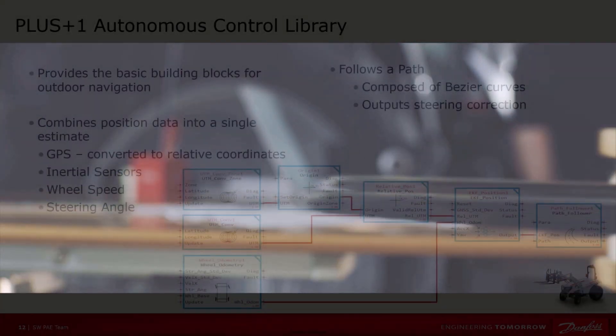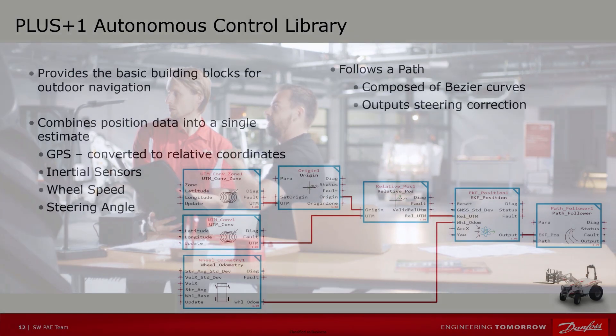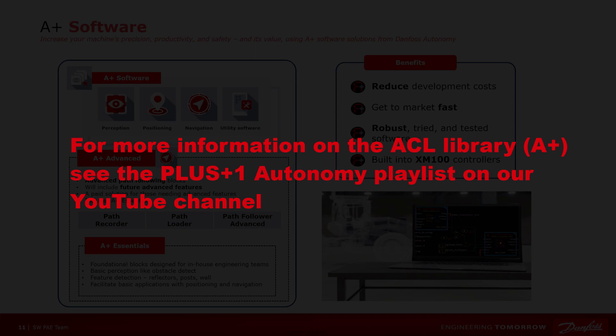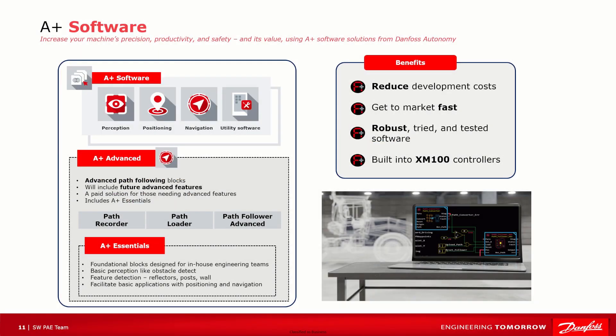The A Plus Advanced is a paid solution with advanced navigation features. It comes with path blocks like Path Recorder, Path Loader, and Path Follower Advanced. The Advanced tier allows you to pre-record a repeatable path, save it, and load it from memory to follow the path. This feature will help you automate repeatable tasks, resulting in increased productivity. The A Plus Advanced will also include other features to be released in the future. If you want to avoid the costs and long timelines of building your autonomous application from scratch, reach out to Danfoss Autonomy.